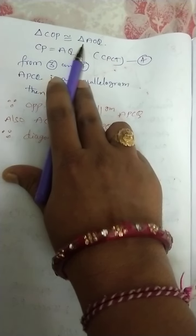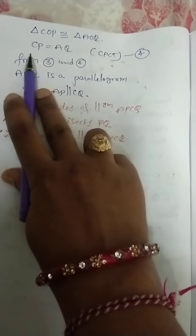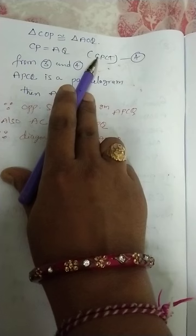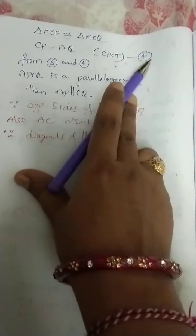Next is triangle COP is congruent to triangle AOQ. CP is equal to AQ by CPCT rule. Let us say equation 4.